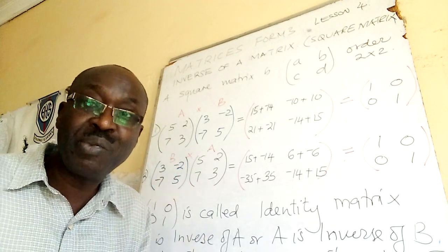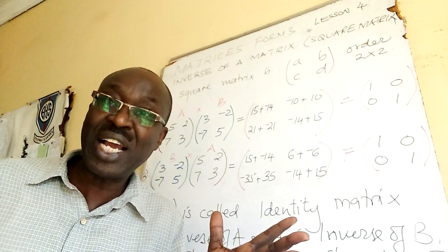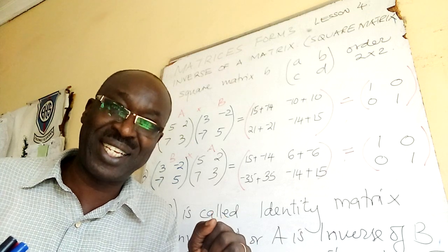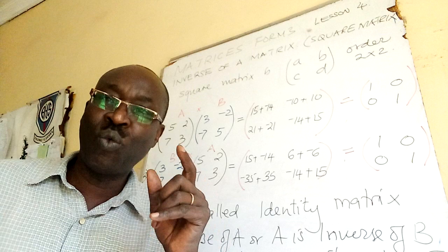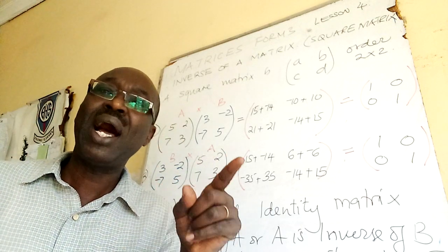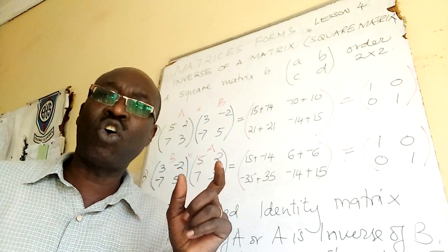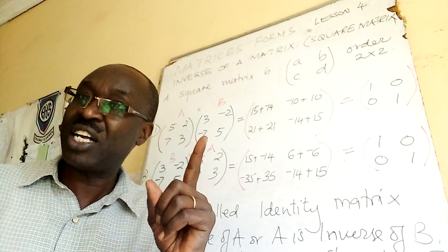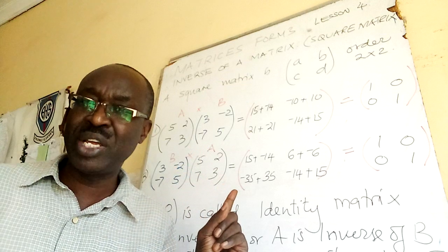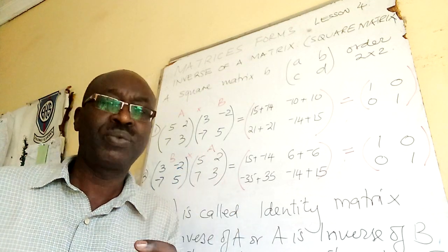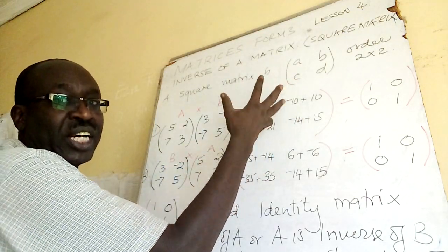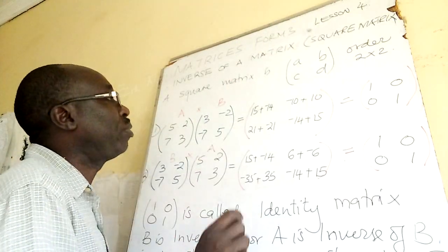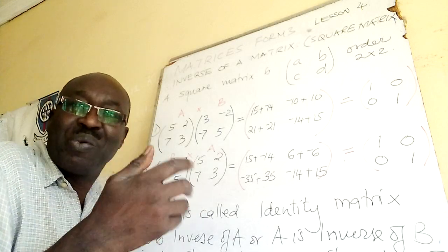When we are studying inverse, remember this is mathematics - you can get inverses of many types of matrices. But for secondary level purposes, we are studying the inverse of a square matrix. It means order two by two. A square matrix is in this format: a 2x2 grid with two rows and two columns.